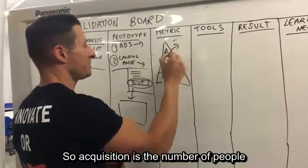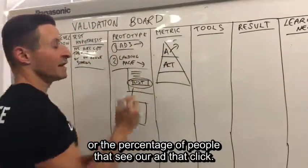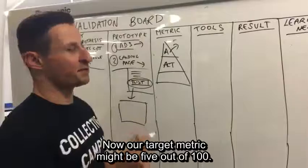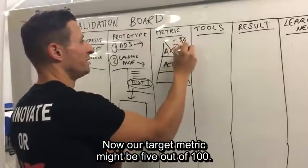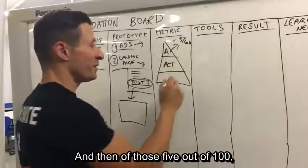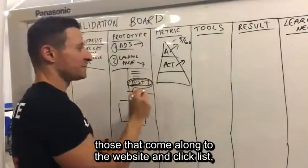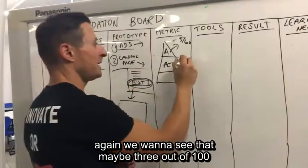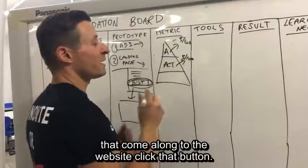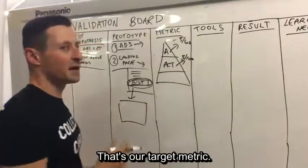Acquisition is the number or percentage of people that see our ad and click. Our target metric might be five out of 100. Then of those five out of 100 that come along to the website and click 'list', we want to see that maybe three out of 100 click that button. That's our target metric.